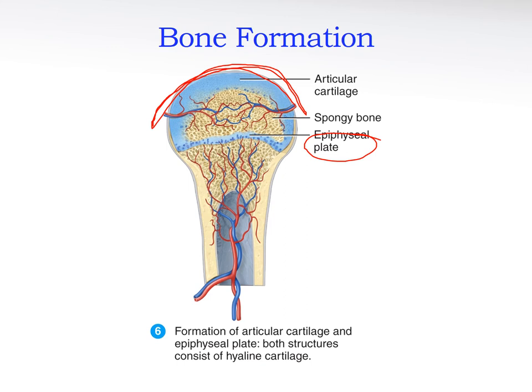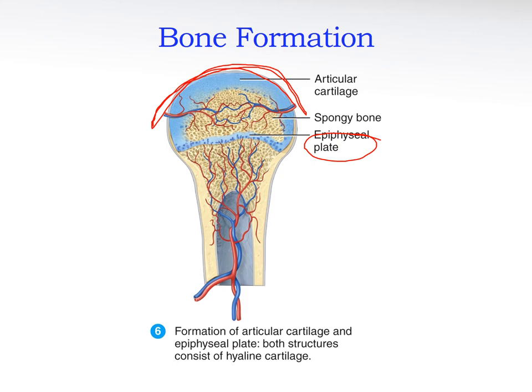As long as there is cartilage there will be chondrocytes, and they keep growing — that's how we grow — until all the cartilage of the epiphysial plate is calcified. Once that's complete, there's no more growth. Summarizing: long bones have two ossification centers, primary in the diaphysis and secondary in the epiphysis, leaving an epiphysial plate that calcifies when growth is complete. The only cartilage remaining afterward is the articular cartilage.